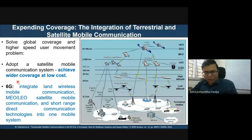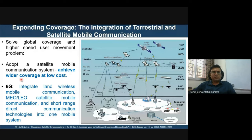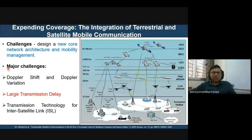Expanding coverage for terahertz is challenging since signals cannot travel long distances, potentially requiring too many base stations or small access points, which may not be feasible due to high deployment costs. Where 6G base stations cannot be deployed, satellite communication can be integrated for seamless connectivity. However, satellite communication has very large transmission delay, creating a sync-in-delay bottleneck between satellite and 6G terahertz — an open research problem.